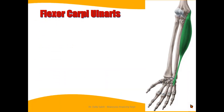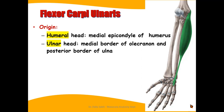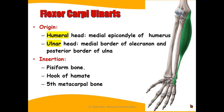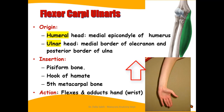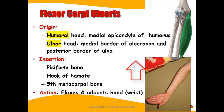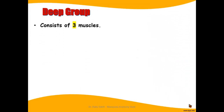The action of flexor digitorum superficialis is to help in flexion of the proximal interphalangeal joints and the metacarpophalangeal joints of the medial four fingers, and also to assist in flexion of the wrist. The flexor carpi ulnaris is the most medial muscle of the superficial group. It arises from the medial epicondyle of the humerus, from the medial border of the olecranon process of the ulna, and also from its posterior border. It inserts at the pisiform bone, the hook of the hamate, and the fifth metacarpal bone, causing ulnar deviation or adduction of the wrist and assisting in flexion of the wrist.